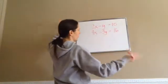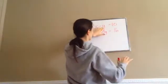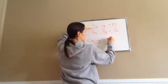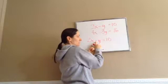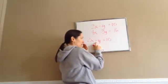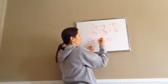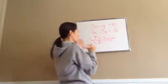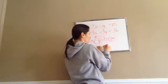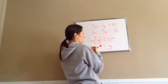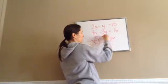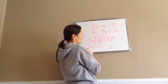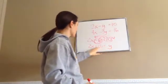I want to say y equals something. Take 2x minus y equals 10 and get y by itself. Because this is a negative y, I don't want to leave it on that side. Move the negative y across to make it positive y, and move the 10 across so it becomes negative 10. So I get 2x equals y plus 10, or rearranged: y equals 2x minus 10.